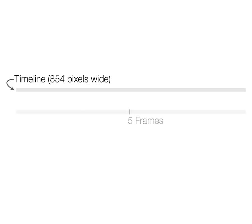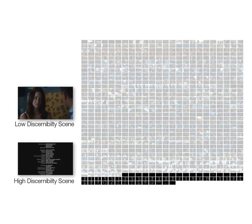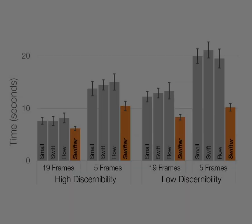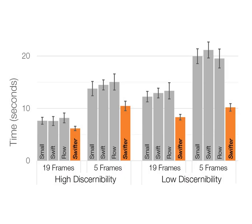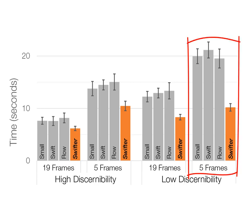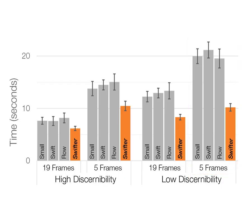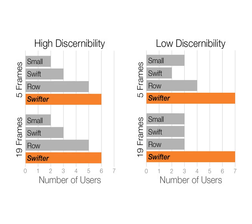The target scenes were 5 frames and 19 frames in length, and distributed throughout the timeline. From the video, we chose a low discernibility scene and a high discernibility scene. The results showed that Swifter was faster than the other techniques in all conditions, and decreased completion times by as much as 48% in the 5-frame, low discernibility condition. Subjectively, Swifter was the most preferred technique in each condition.